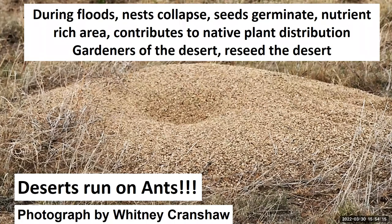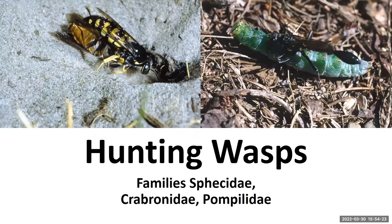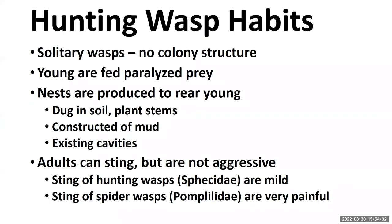Now moving into wasps of the desert. We've got many hunting wasps in the families Sphecidae, Crabronidae, and Pompilidae. These are solitary wasps — no colony structure — pretty much loners. Their nests are dug into soil, plant stems, or mud, just for rearing their young. Adults can sting but many are not aggressive; they have a task at hand and you'd have to be in a really unfortunate situation to get stung, though if you did it would be quite painful.